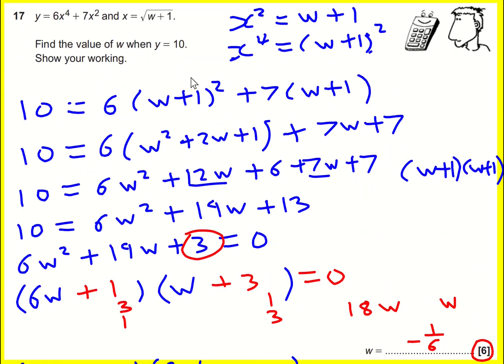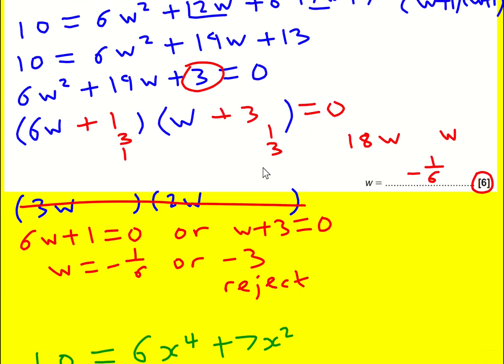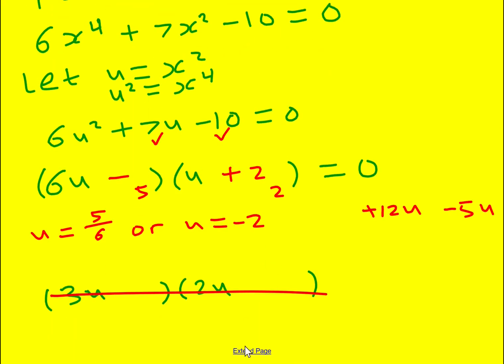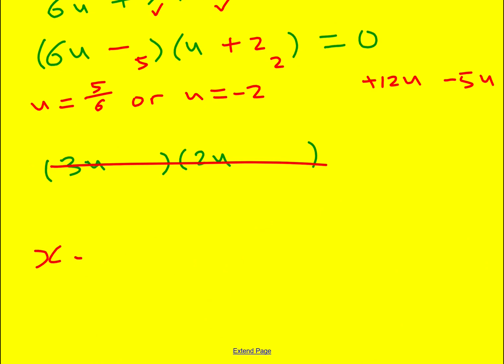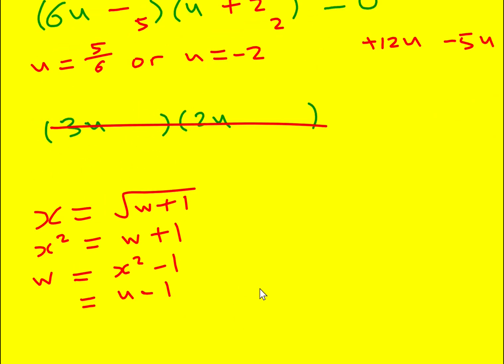So x is the square root of w plus 1. So that would mean that x squared is equal to w plus 1. And therefore w is equal to x squared minus 1. And I did the substitution earlier on of u. So w is actually u minus 1. And therefore, because I've worked out u, it's going to be 5 sixths minus 1, which is minus 1 sixth. Or it's going to be minus 3.